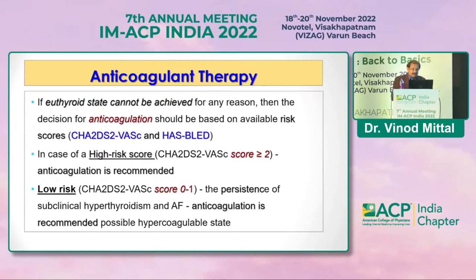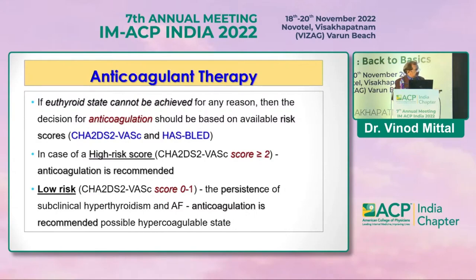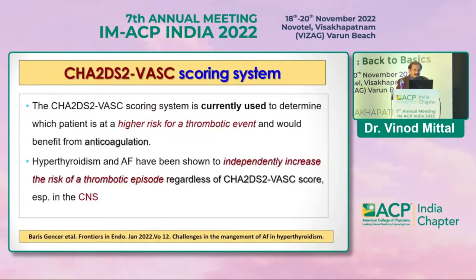If a euthyroid state cannot be achieved, the decision for anticoagulation depends on two scoring systems widely used by cardiologists: the CHA2DS2-VASc score and the HAS-BLED score. If the score is high, anticoagulation is started immediately. If risk is low (score zero to one) and subclinical hyperthyroidism persists with AF, anticoagulation is given only if the condition persists.